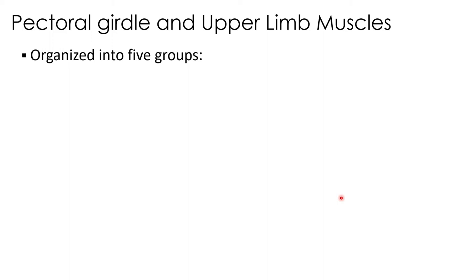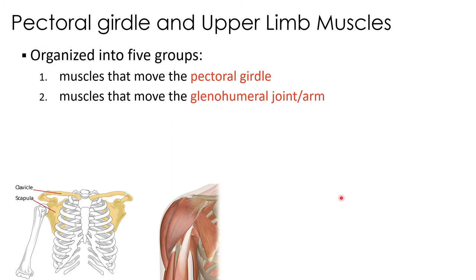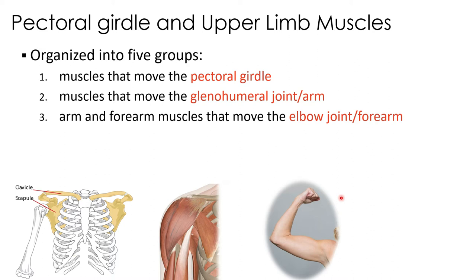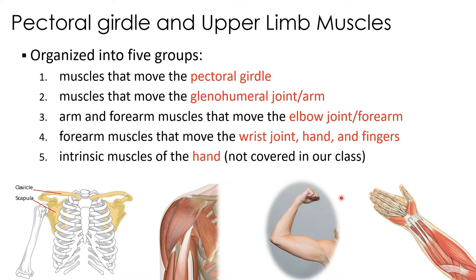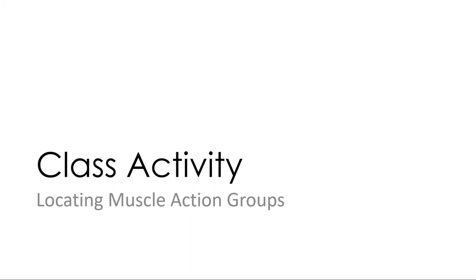The muscles of the pectoral girdle and upper limb are organized into five groups: muscles that move the pectoral girdle, muscles that move the glenohumeral joint, arm and forearm muscles that move the elbow joint or forearm, forearm muscles that move the wrist joint and fingers, and intrinsic muscles of the hand — the last of which won't be covered in this course. If you haven't yet watched the videos for lab lessons 13, 15, and 16 covering axial muscles, upper arm, and forearm muscles, pause and watch those first, as they focus on identification.